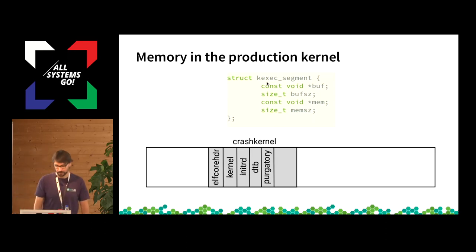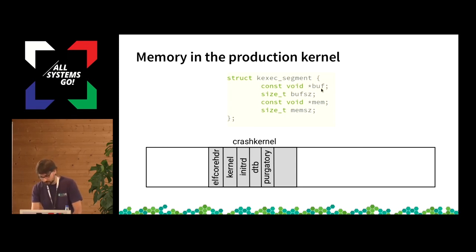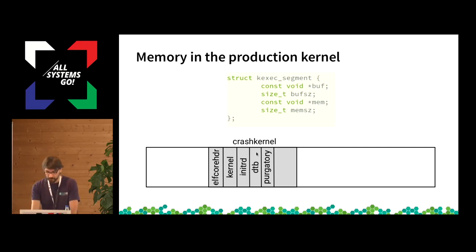When you load the kernel with kexec-tools, it allocates a buffer at a pointer with the size of buff_size, copies the kernel into this buffer, then searches the reserved memory area for a hole where it can copy the kernel, pointing the mem pointer to that location. The same is done for the initrd, the ELF core headers, the device tree blob, and the purgatory — I will explain each of these.